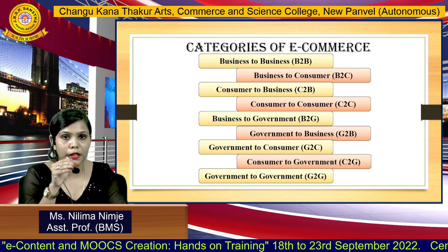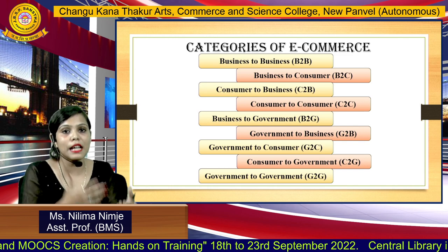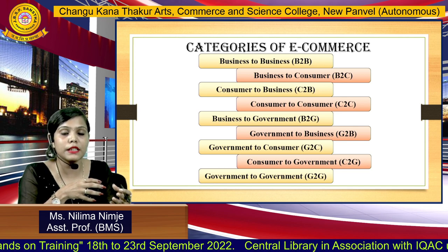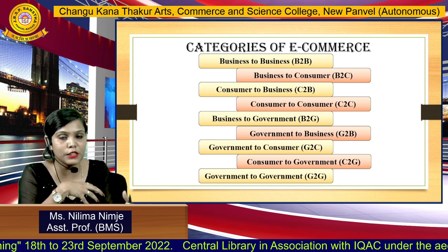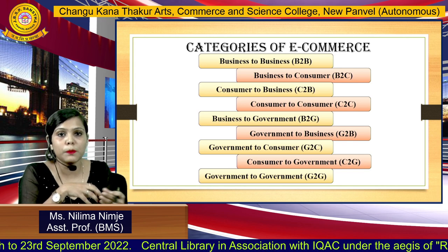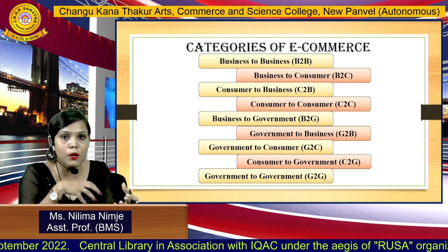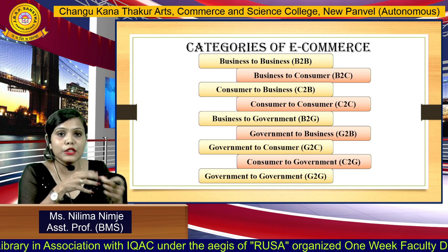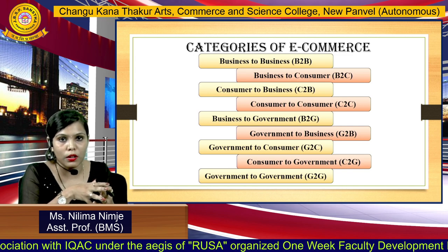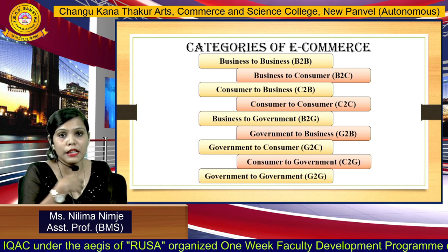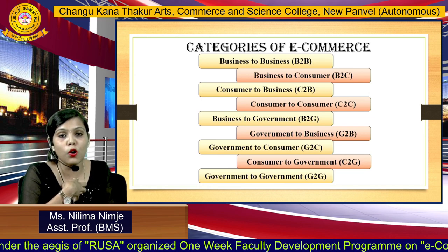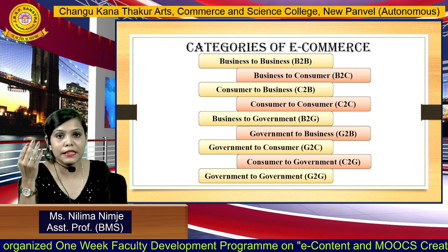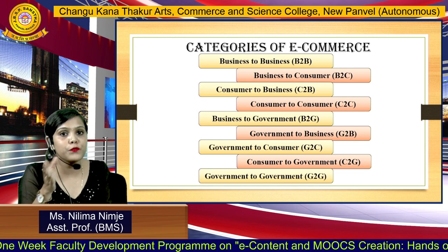Moving towards the next model — C2G, Consumer to Government. In this model, the consumer transacts with the government. Consumers may request certain information related to the public sector, give feedback to government institutions, or make payments on government portals. For example, people like you and me use government websites to pay electricity bills or pay taxes online — that is an example of the C2G model.